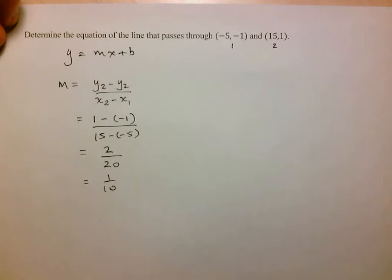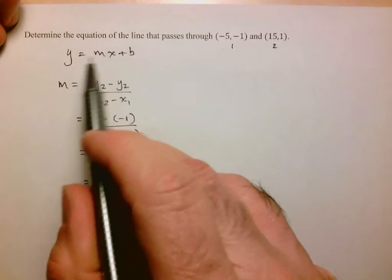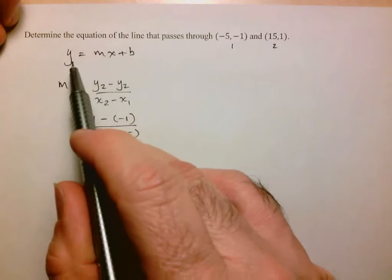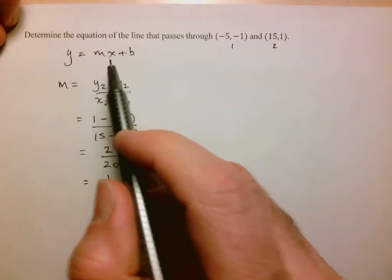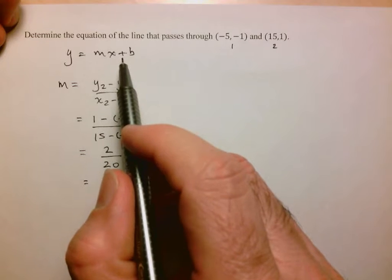Now in order to determine the b value, I look at my equation. I now have the slope, and remember that x and y just represent points on the line. So I can use one of these points and put everything into the equation. Let's see what happens.